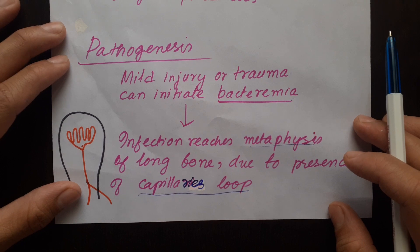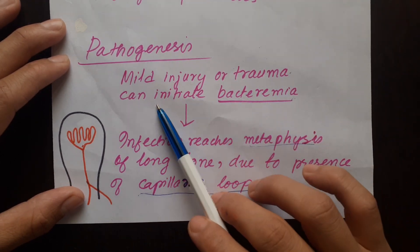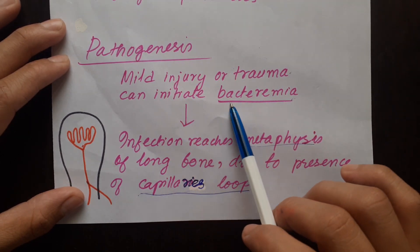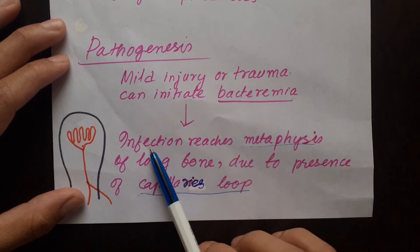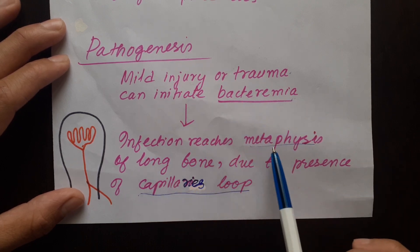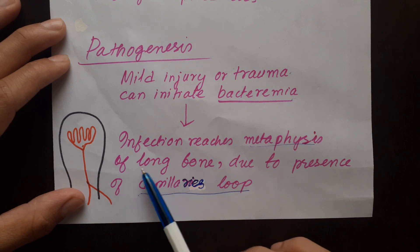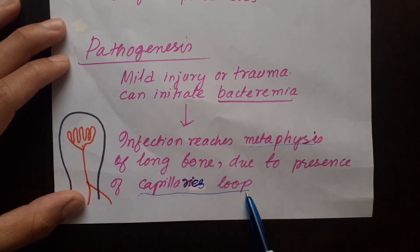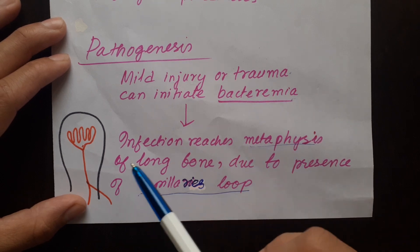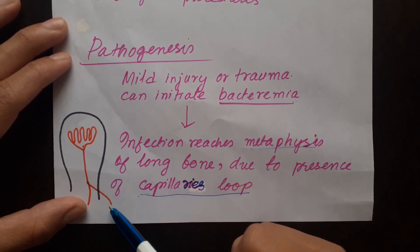Now let's see the pathogenesis. Mild injury or trauma can initiate bacteremia. After causing bacteremia, the infection reaches the metaphysis — that is the main site of long bone — due to the presence of capillary loops in the metaphysis area.